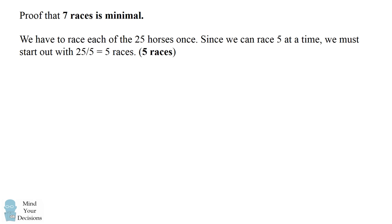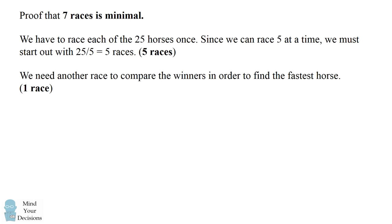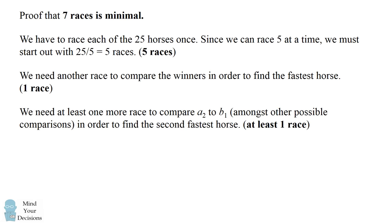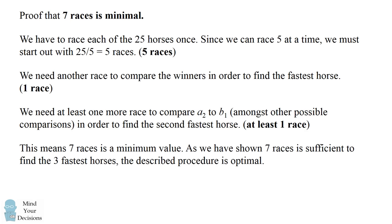Just a quick note: we've shown that seven races is sufficient, but I want to explain why it's minimal. We obviously have to race each of the 25 horses once, and since we can race five at a time, that means we need at least 25 over 5, which is five races. We then need to compare the winners — one more race. And we need to compare at least the second place from group A to the fastest horse in group B, among other comparisons, to find the second fastest horse. So we know at least seven races are needed, and we've shown seven is sufficient. Therefore, the described procedure is optimal.